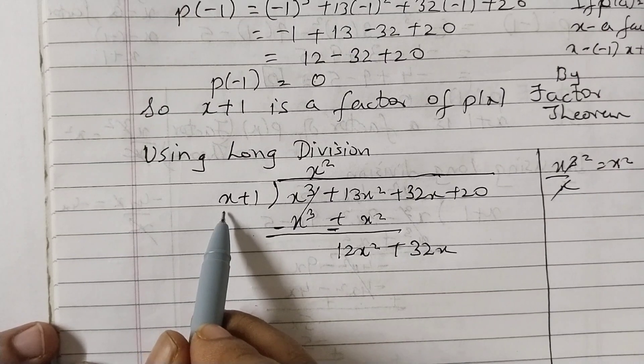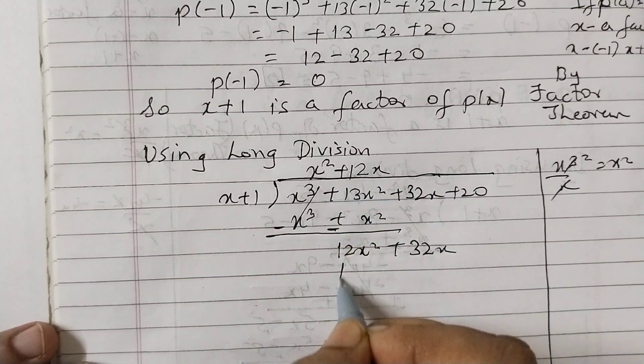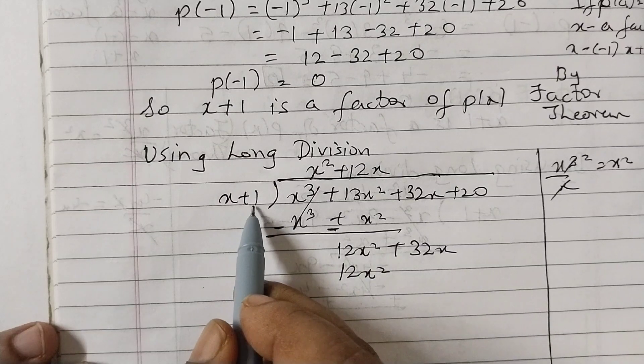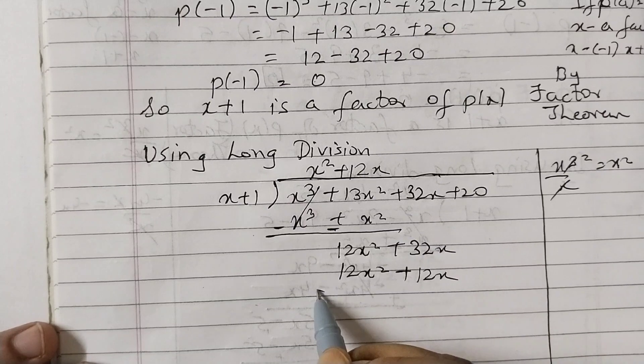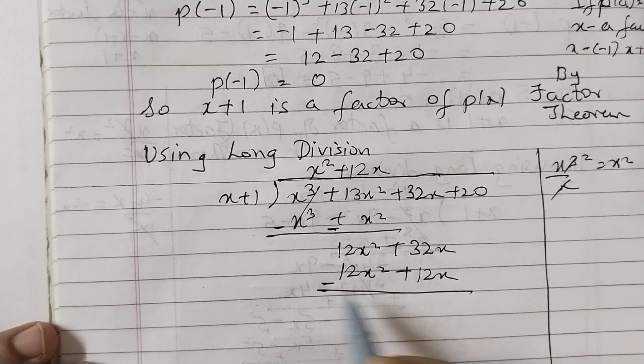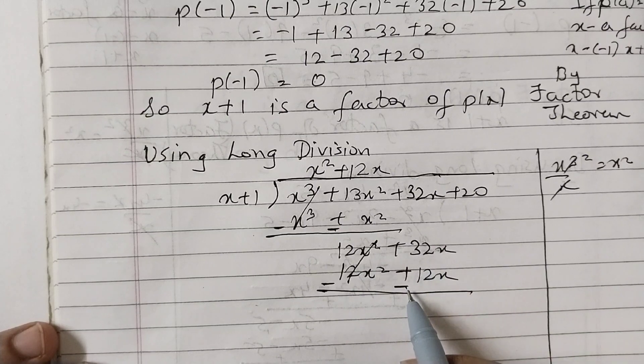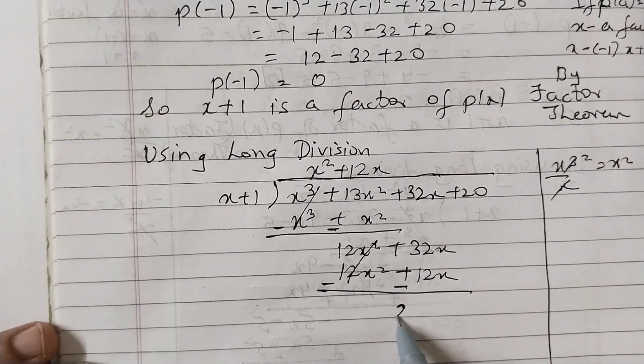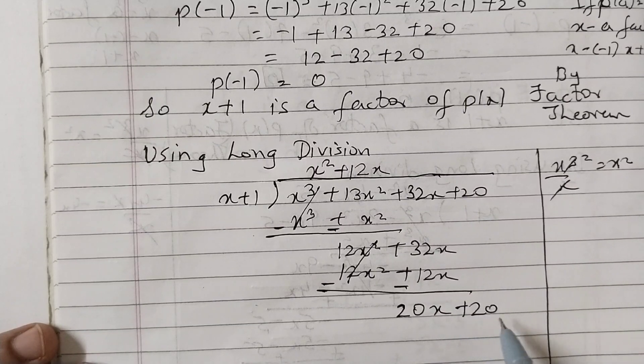Now 12x² divided by x = 12x. So multiply by 12x. This would be 12x² plus 12x. Subtract. 32x - 12x = 20x. Next term down: plus 20.